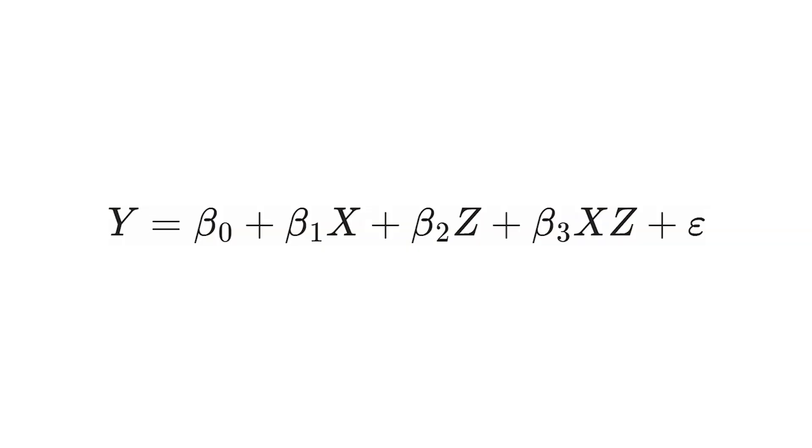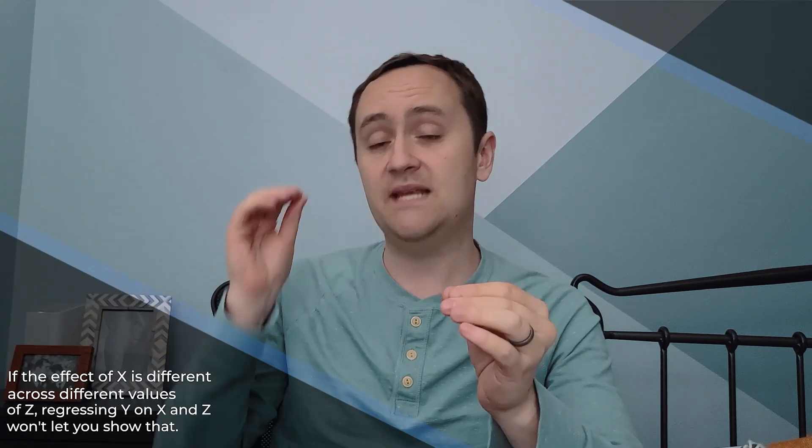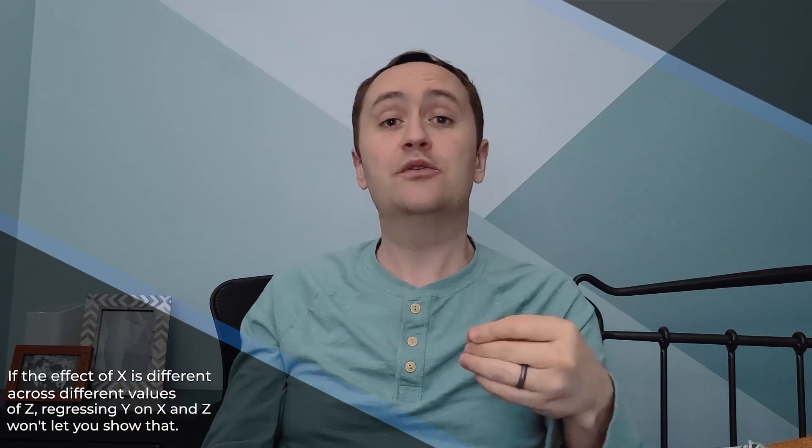Here's an example of an equation with an interaction term: we're regressing y on x, with z as a control, and x times z as the interaction term. We're interested in the effect of x, but allowing it to vary across values of z. Something important: adding z as a control by itself does not do this. It's a common misconception that adding z allows the effect of x to differ across values of z. Adding z just moves the line up and down — the slope on x stays the same.